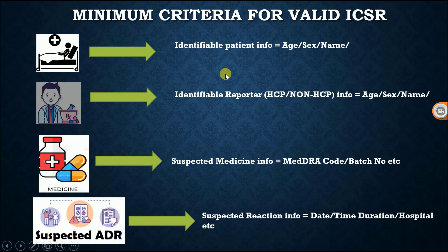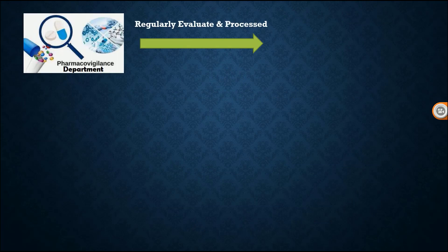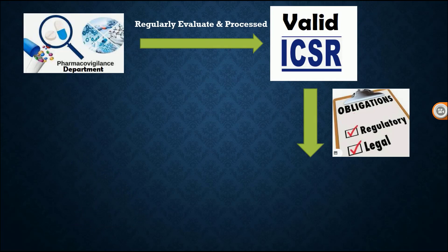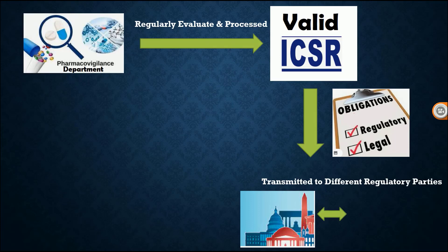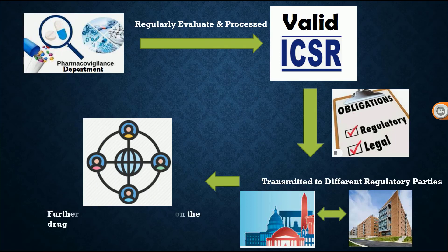The E2B R2 and E2B R3 guidelines will be discussed in detail in the next lecture. The pharmacovigilance department regularly evaluates and processes valid ICSR reports, and these reports, under regulatory and legal obligations, are transmitted to different regulatory parties such as USFDA, ICH, WHO, and various other regulatory authorities. After transmission, these authorities do further analysis and discussion on the drug reports.